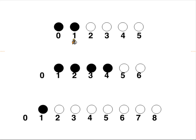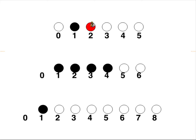Can you see the mistake that I've made? Can you see why there isn't a circle colored in above the zero? Because if you color in a circle above the zero, you don't have one circle, you've got two. So we have to get rid of that. Let's color in one more — one more than one is two.